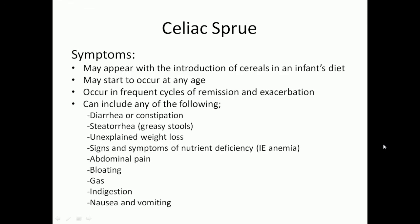The symptoms of celiac sprue may appear with the introduction of cereals in an infant's diet, may start to occur at any age, and occur in frequent cycles of remission and exacerbation. Symptoms can include diarrhea or constipation, steatorrhea, unexplained weight loss, signs of nutrient deficiency, abdominal pain, bloating, gas, indigestion, and nausea and vomiting.